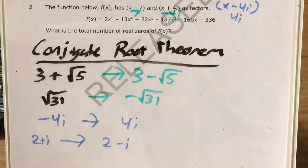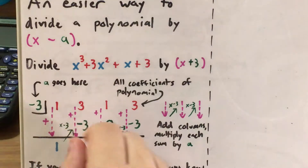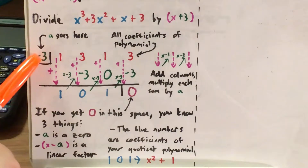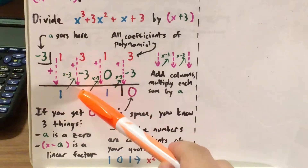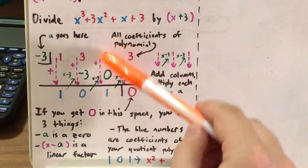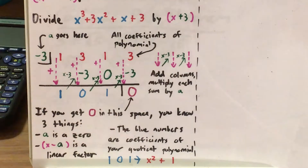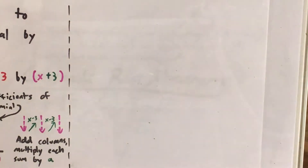Now we need to actually test each of these possible roots using synthetic division. With synthetic division, we make a grid. The number we're testing goes on the left, and all the coefficients of my polynomial go across the top row. Then we do a zigzag — add and multiply repeatedly — until we get a number at the end. We want that number to be zero, confirming that the number we're testing is actually a zero and that the linear factor is valid.